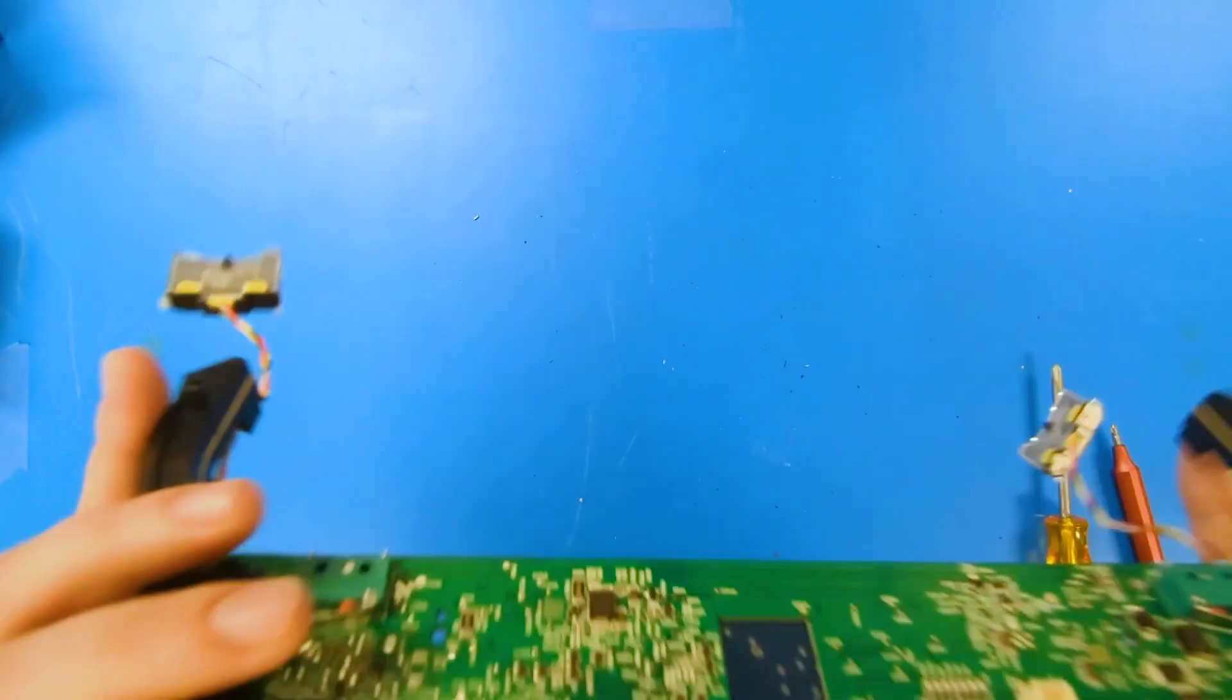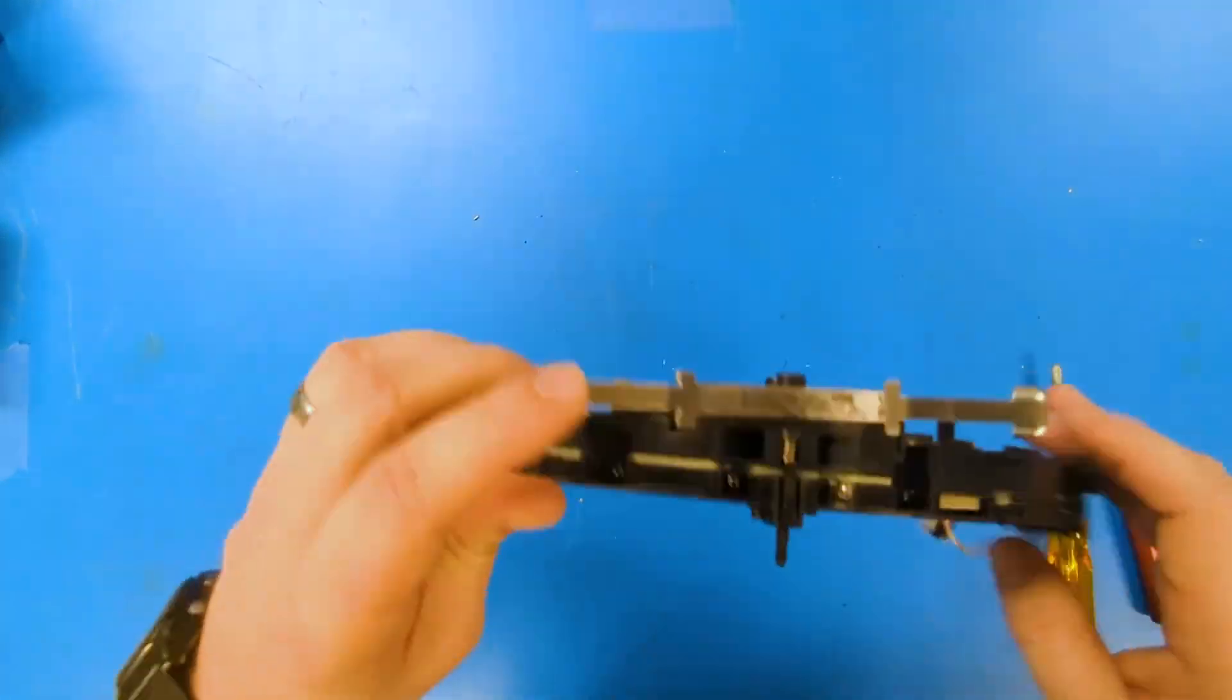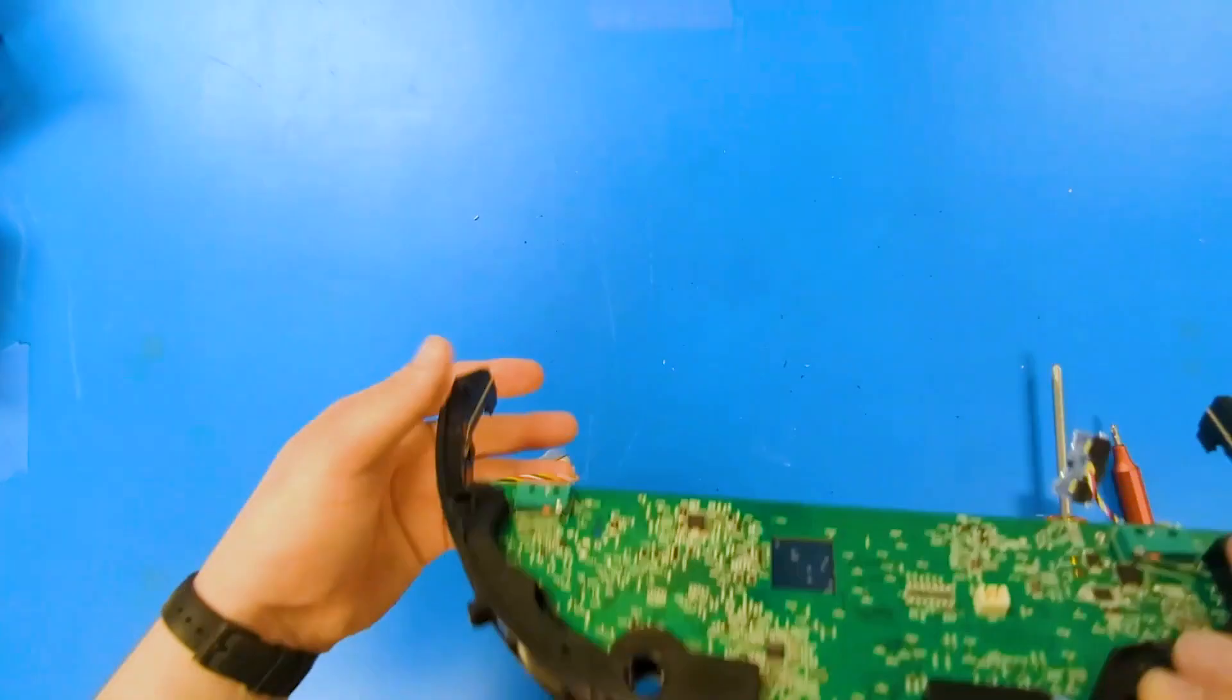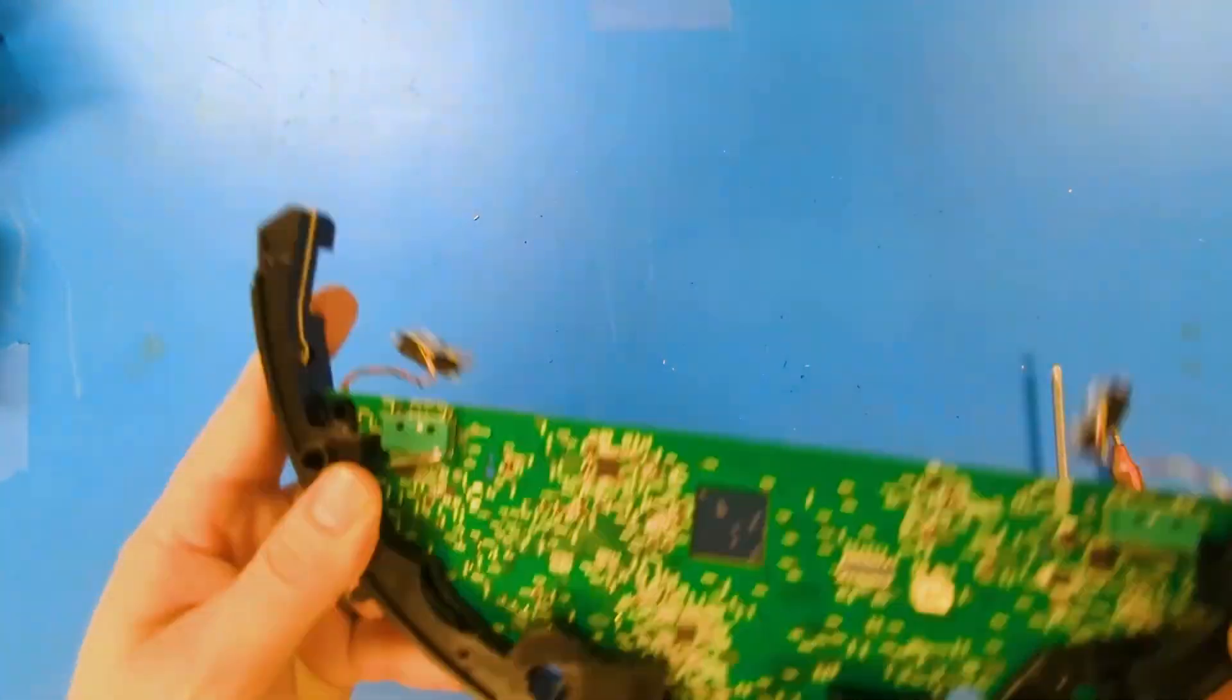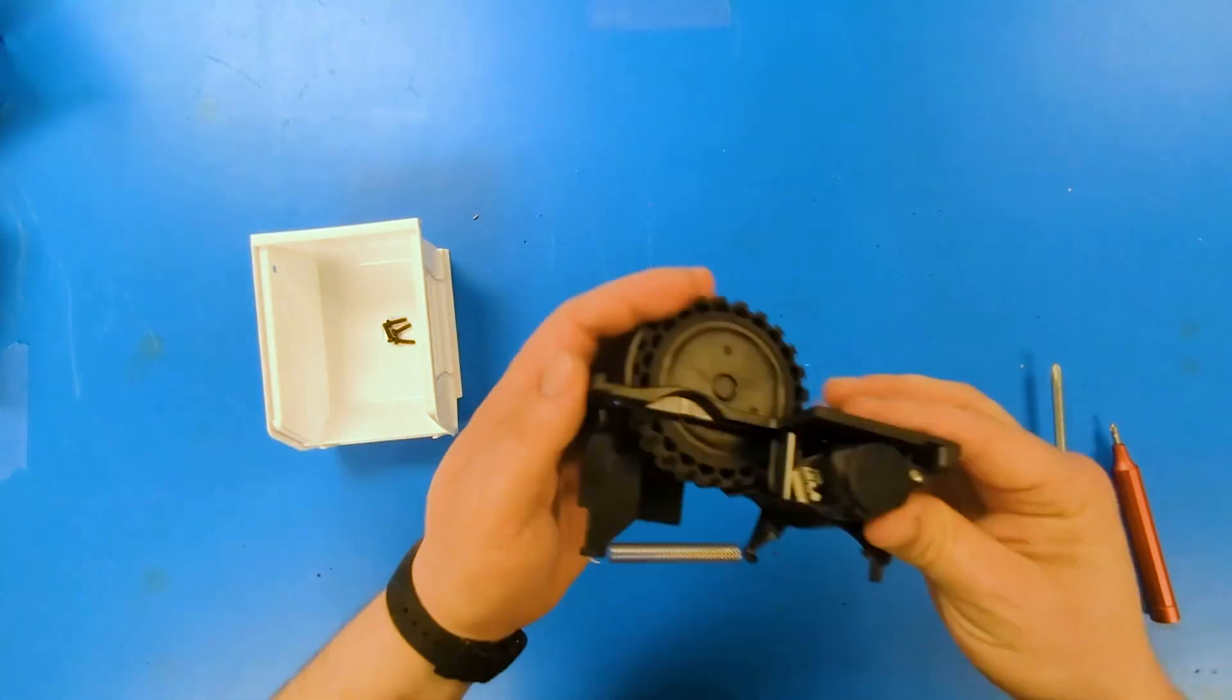Looking then at the front PCBA assembly, there's a handful of IR sensors and edge detect sensors to ensure that the device knows where it's going, doesn't fall off cliffs.